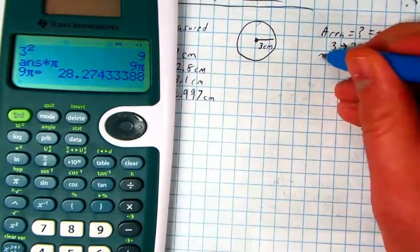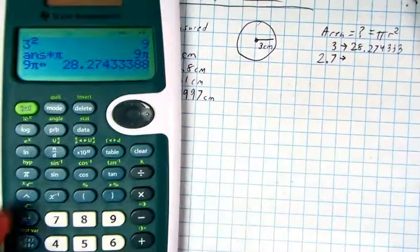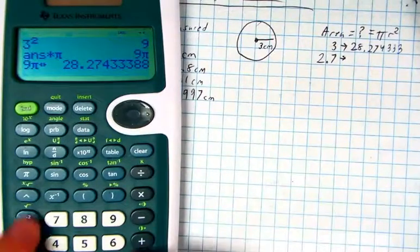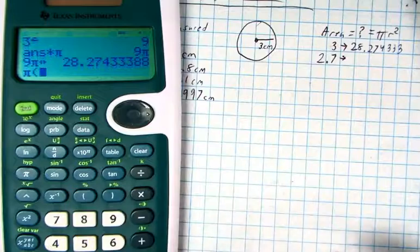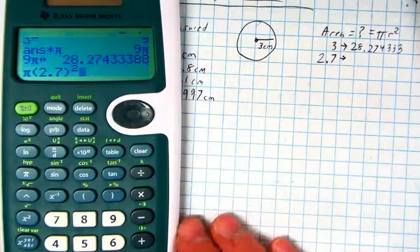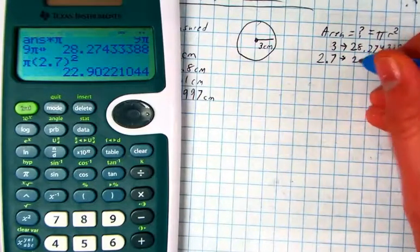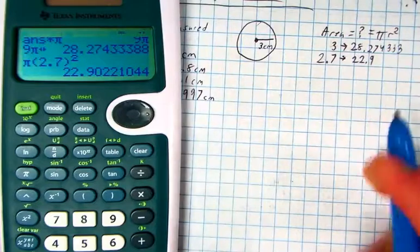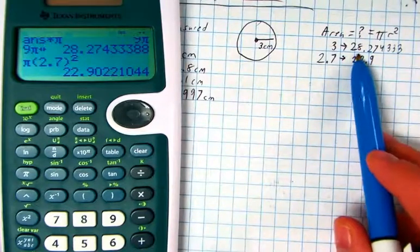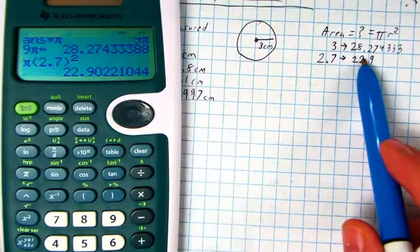What if it was 2.7? How would that change my answer? So what if I said, pi times 2.7 squared? How would that change it? We would get 22.9. Now, I'm going to make the argument that 22.9 and 28 are very, very different numbers.